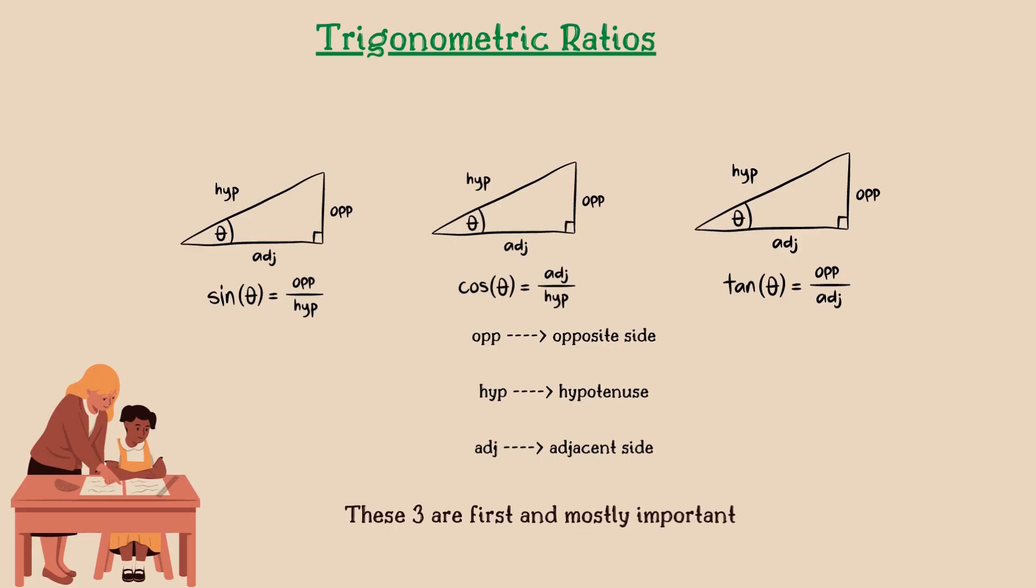In trigonometry ratios we have different formulas: sin, cos, tan, sec, and cosec, which are represented within right angle triangle sides. Those are opposite side, adjacent side, and hypotenuse side. See the above figures.